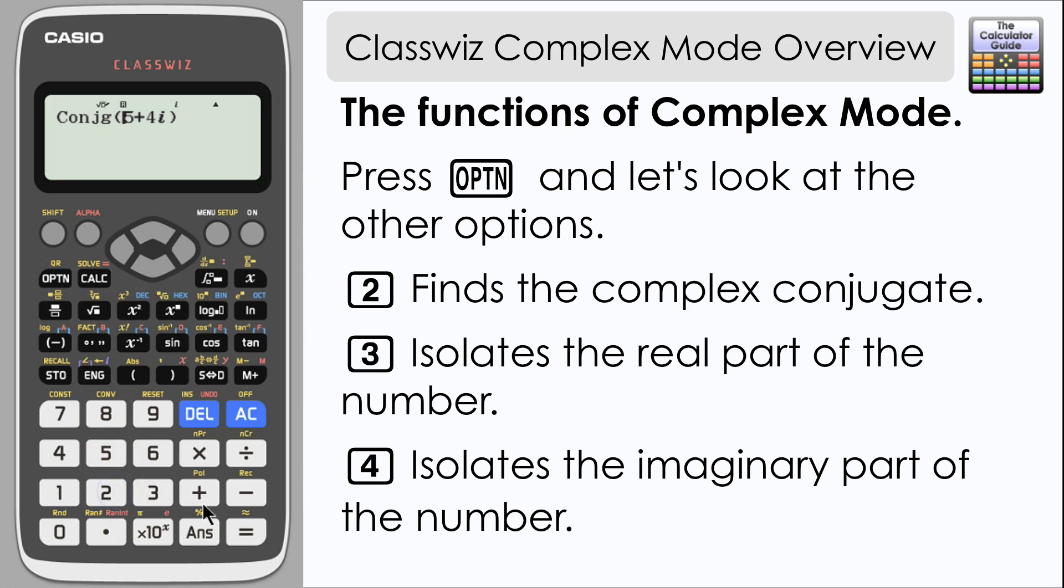So we're going to find the complex conjugate of 5 plus 4i. That is relatively easy, 5 minus 4i, but it is another option available to us.